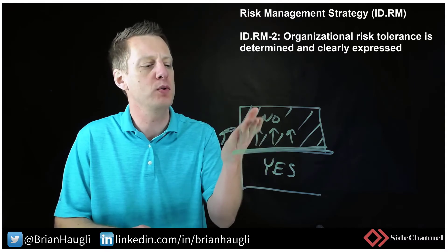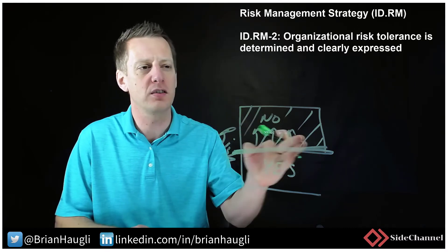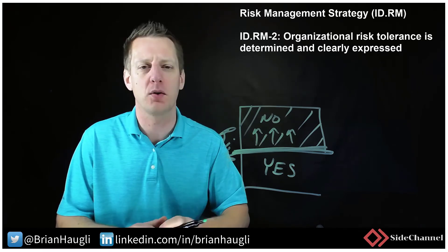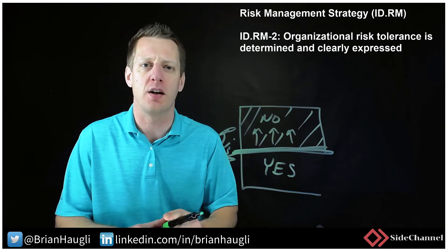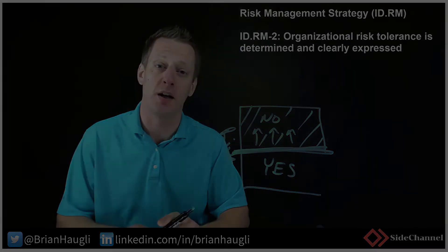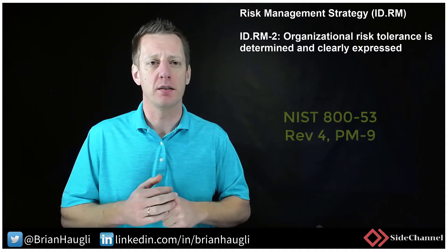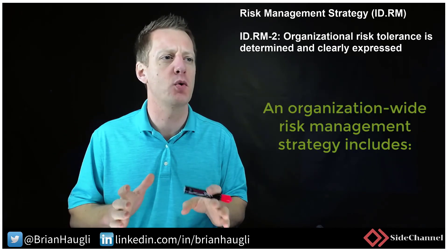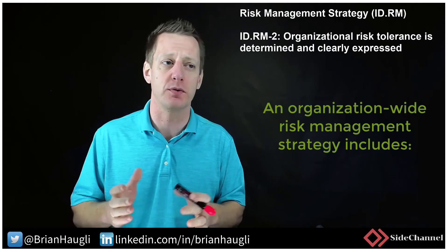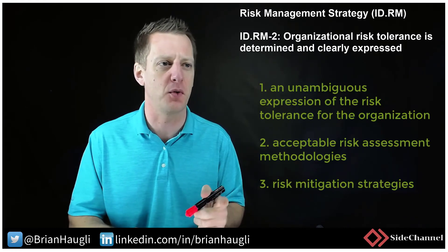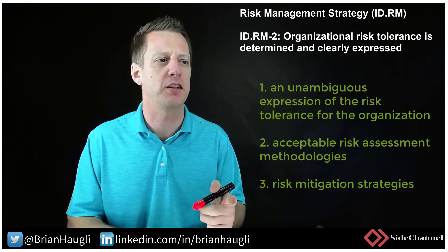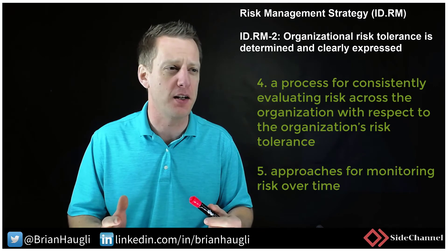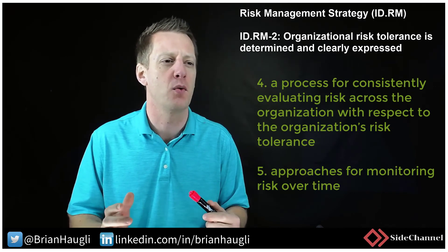A line must be drawn. It's up to the business to definitively say where this line is, but you need to establish it with them. Once it's clearly expressed, it's going to be a lot easier for anyone in the organization to determine whether something needs to be addressed or whether it's within your risk tolerance. NIST 800-53 PM-9 outlines this very concept: an organization-wide risk management strategy includes an unambiguous expression of risk tolerance for the organization.